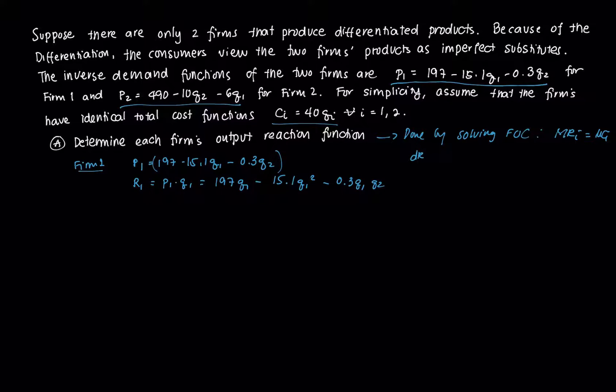If you take the derivative, ∂R1/∂Q1 equals MR1, which is 197 minus 2 times 15.1, that's 30.2Q1 minus 0.3Q2.